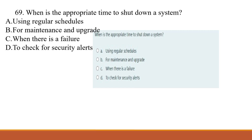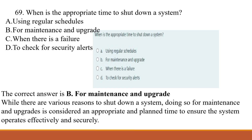Question 69: When is the appropriate time to shut down a system? A) using regular schedules, B) for maintenance and upgrade, C) when there is a failure, D) to check for security alerts. The correct answer is B, for maintenance and upgrade. There are various reasons to shut down a system; maintenance and upgrade is considered the appropriate and planned time to ensure the system operates effectively and securely.